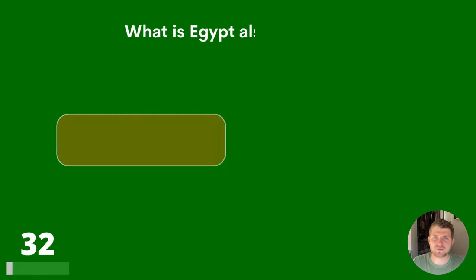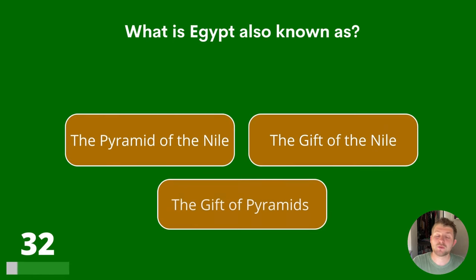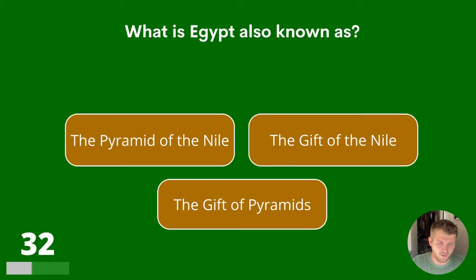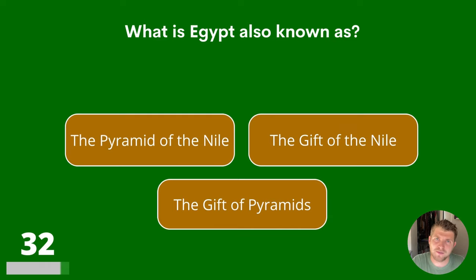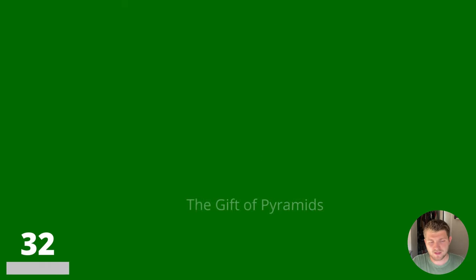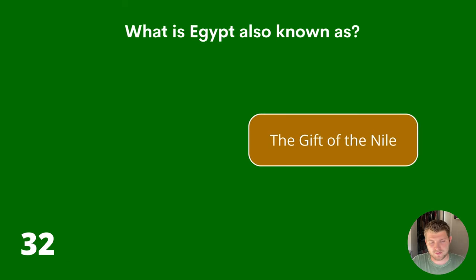Apologies for any mispronunciations. Question 32. What is Egypt also known as? The Pyramid of the Nile, the Gift of the Nile or the Gift of Pyramids? The answer is The Gift of the Nile.